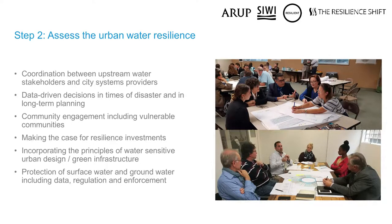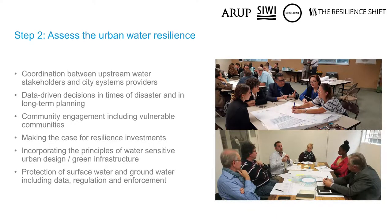In addition, community engagement is at the core of building urban water resilience, and it can be challenging to reach some of the vulnerable communities. Some cities find it challenging to make the case for resilience investment — it's often seen as resilience investment versus business as usual investment. Cities need an enabling environment for new green infrastructure and urban water design practices to help incorporate them into their city. Finally, a common and well-established problem across the water system is the need for the protection of surface water and groundwater, and having sufficient data, regulation, and enforcement around those crucially important water sources.